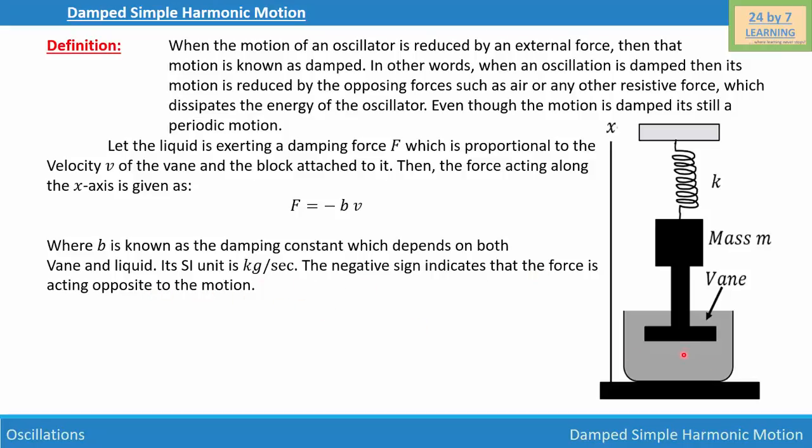So basically, there is a liquid and a spring, and when there is motion in this vane with mass m, the damping force is acting opposite to the motion of the body. That's why we have a negative sign. Similarly, we can find the force acting on the block due to the spring is given as F = -kx.